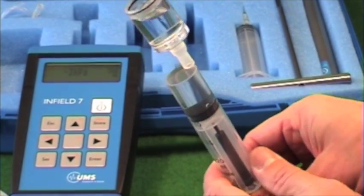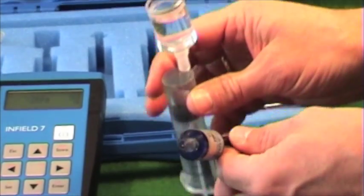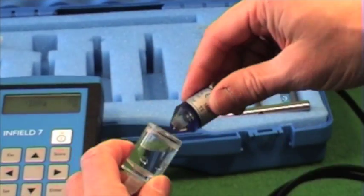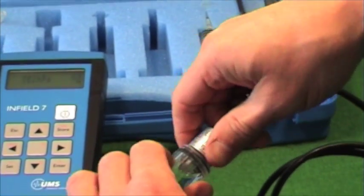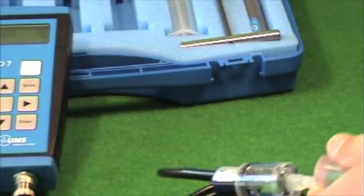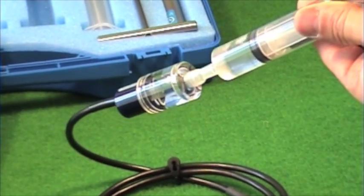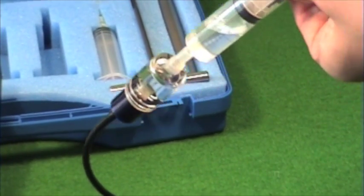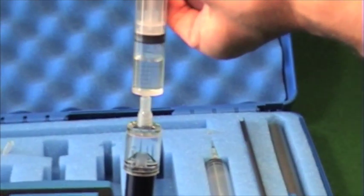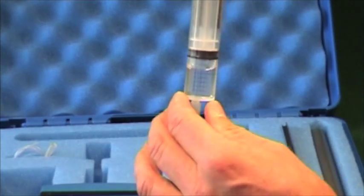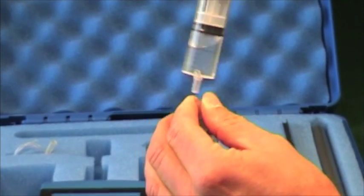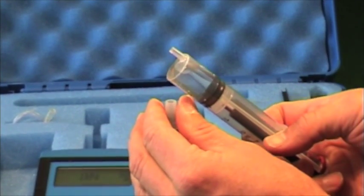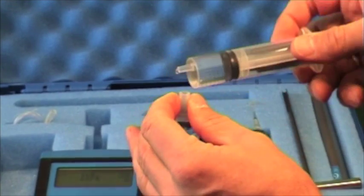Now insert the sensor body. If you rotate the sensor body against the adapter it will slip in easier. Take off the tube and remove the air from the syringe. Leave the sensor inside the adapter.